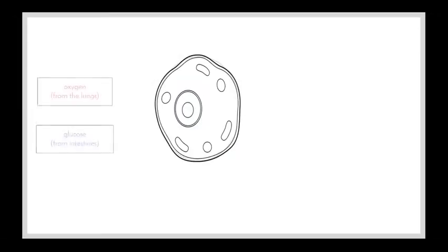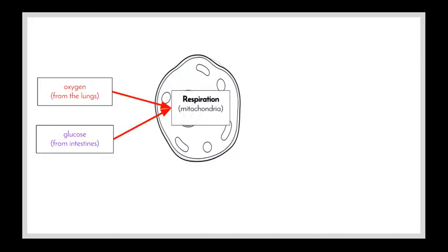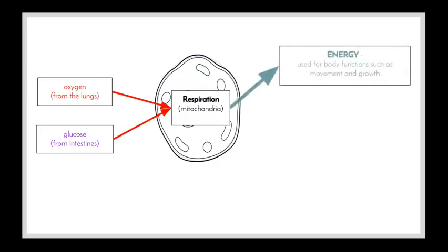Looking at a simple cell, the two reactants for cellular respiration are oxygen, which comes from the lungs, and glucose, which comes from the intestines absorbed from food. The circulatory system brings these to the cell. In the mitochondria, these substances are broken down and atoms rearranged to form new products. The main output is energy, used for movement and growth. Cells requiring more energy, like muscle cells, have more mitochondria than, for example, skin cells.